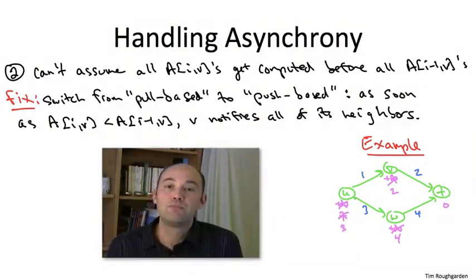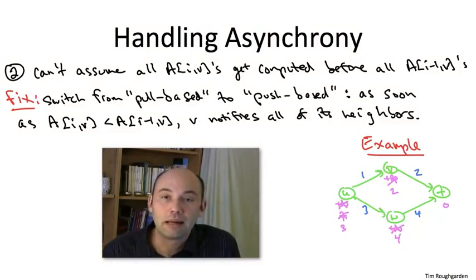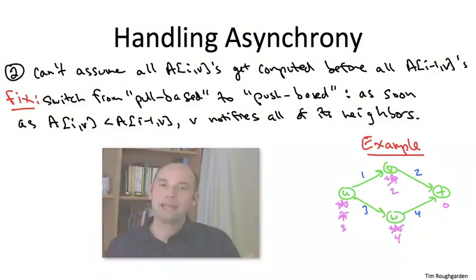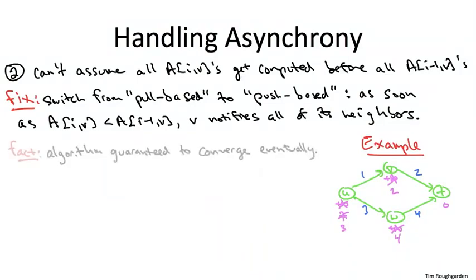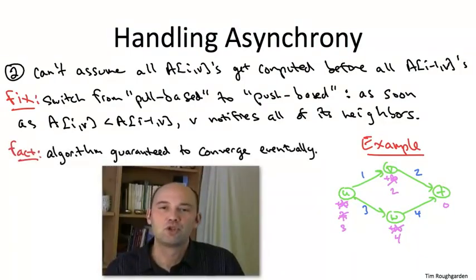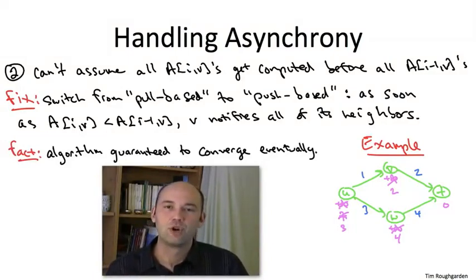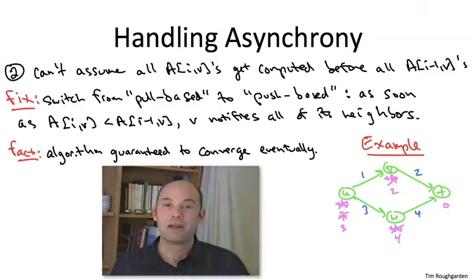So in this particular example, this asynchronous push-based implementation of Bellman Ford did correctly compute shortest paths. And that is, in fact, true in general, in any network. And of course, when I state this fact, I'm assuming that there's no negative cycles. In the context of internet routing, negative cycles aren't a big deal. Usually, you think of all of the edges as having non-negative length in internet routing applications.